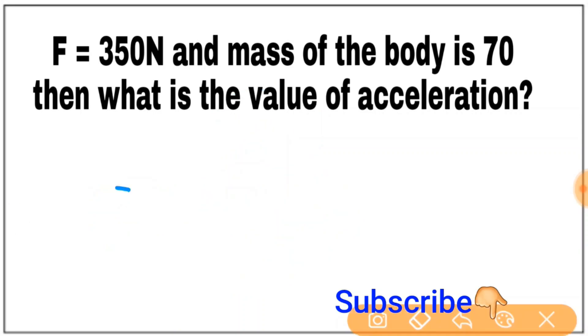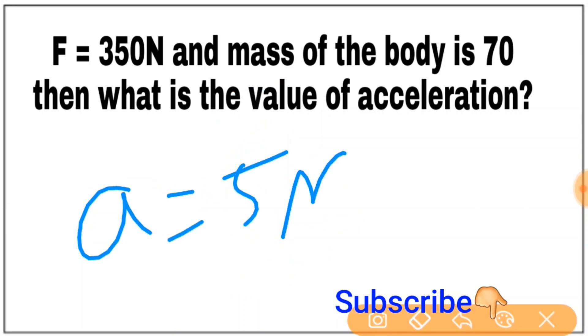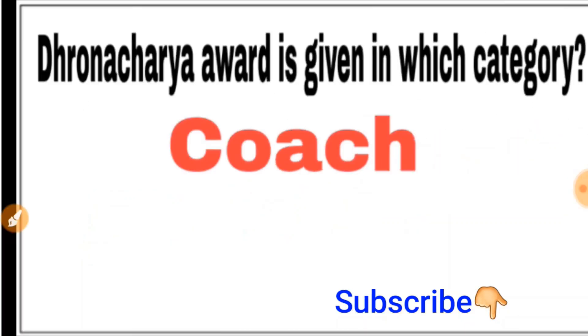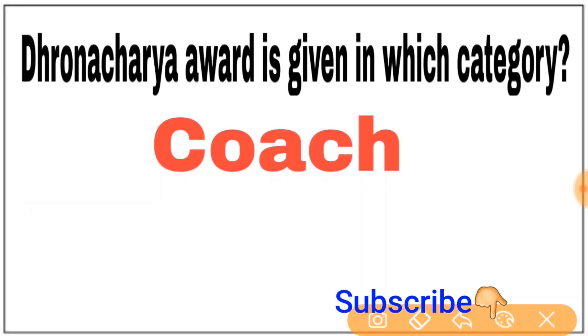A is equal to 5 meters per second squared. The answer is 5 meters per second squared.